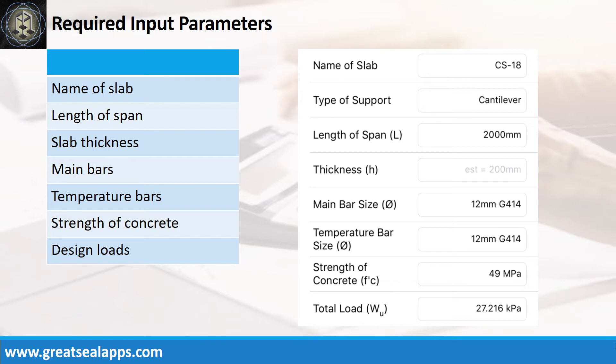Main bars and temperature bars, 12 mm bar at grade 414. Strength of concrete, 49 MPa. And factored load, 27.216 kN per meter.